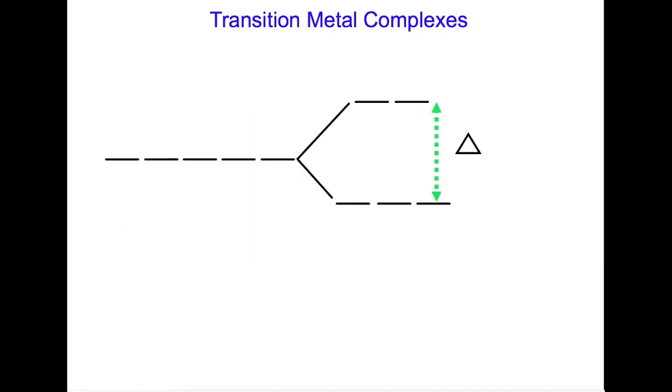This diagram here shows the five degenerate d orbitals, whereas here we can see that they have now split in energy. So the ones down at the bottom are those which face between the axes, and the ones up at the top are those that face towards the axes.